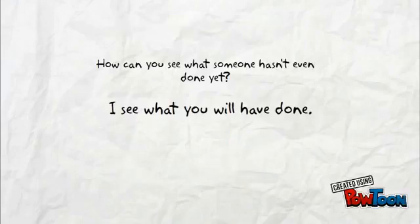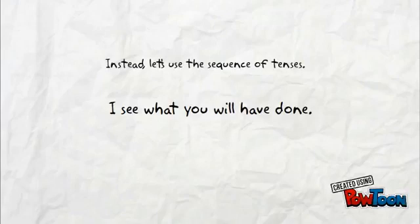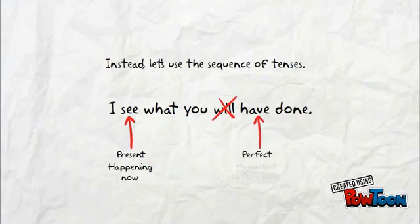We fix this problem by using the appropriate sequence of tenses. We'll keep 'I see' in the present tense and change 'you will have done' to the perfect tense: 'you have done.' That way, the timeline in the sentence makes sense.